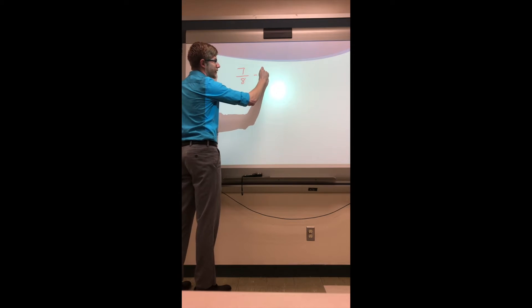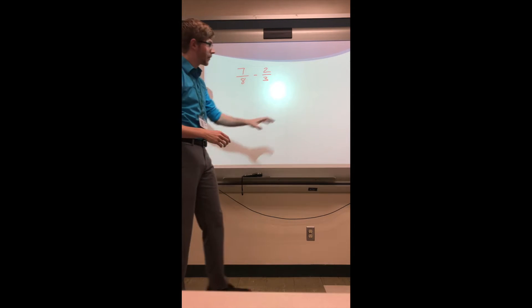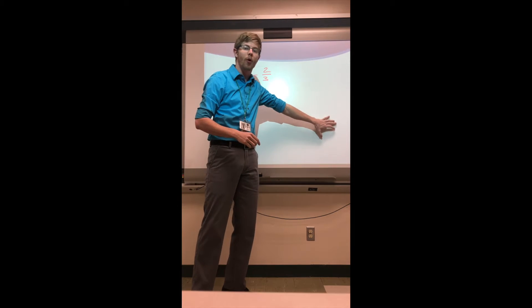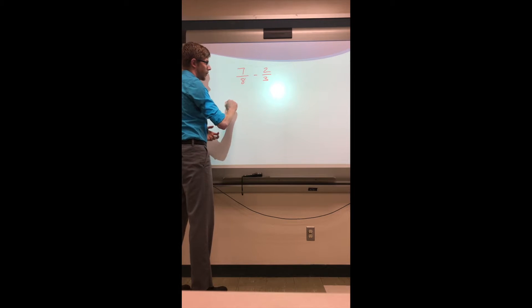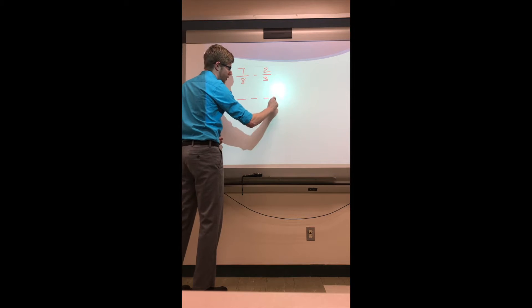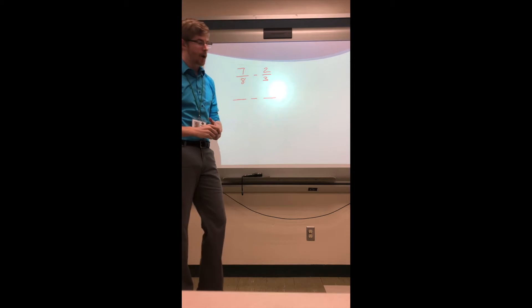So let's say that we had seven-eighths minus two-thirds. Again, if you think about the steps that we had over here and that you hopefully put in your notebook, first thing we want to do is we need to find that common denominator. So I'm going to set up my two fractions with a subtraction in between.